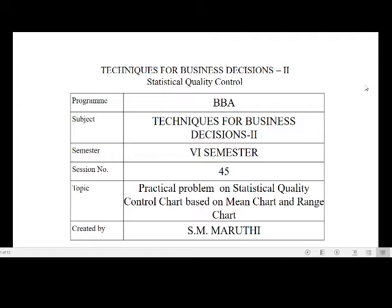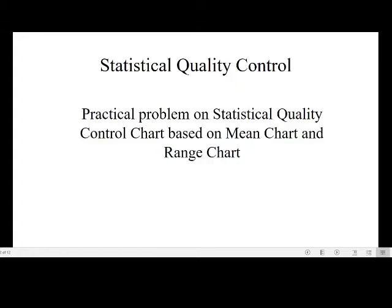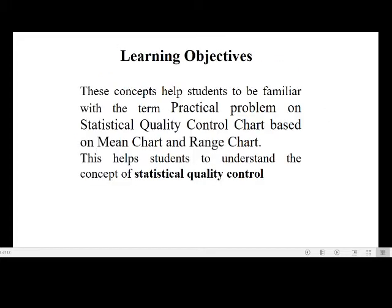This is Techniques for Business Decision, second chapter: Statistical Quality Control. The syllabus is introduced by Coompho University for sixth semester BBA. This is session number 45. In this session we will cover practical problems on statistical quality control charts based on mean chart and range chart, covering 5-mark and 10-mark problems as asked in the university examination.